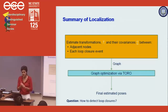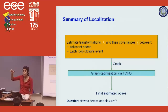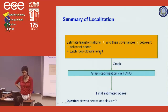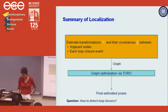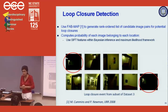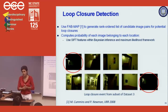The summary of our localization algorithm: we estimate incremental transformations T_ij and associated covariances sigma_ij both between adjacent nodes and every time we detect a loop closure. We build a graph and use the Toro software from Burgard's group in Germany to optimize it, giving a final estimated path. The key unsolved piece is: how do we detect loop closures? We use the cameras — detecting when we're approximately at the same place using the FAB-MAP technique from Newman's group at Oxford, which generates a rank-ordered list of candidate image pairs for potential loop closures.